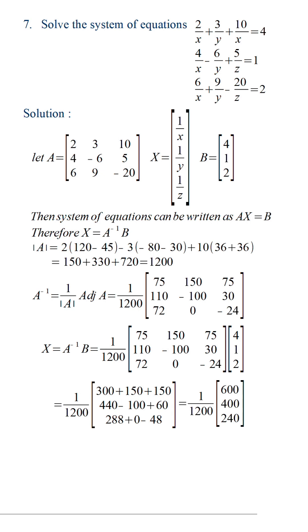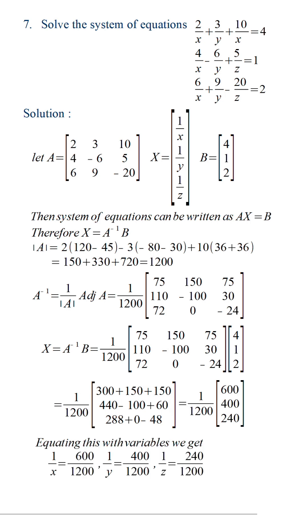Solving it and simplifying, we get 1 upon 1200 multiplied by the matrix of 600, 400, and 240. Now by equality of matrices we get 1 upon X is equal to 600 by 1200, 1 upon Y is equal to 400 by 1200, and 1 upon Z is 240 by 1200. Therefore X is equal to 2, Y is equal to 3, and Z is equal to 5.